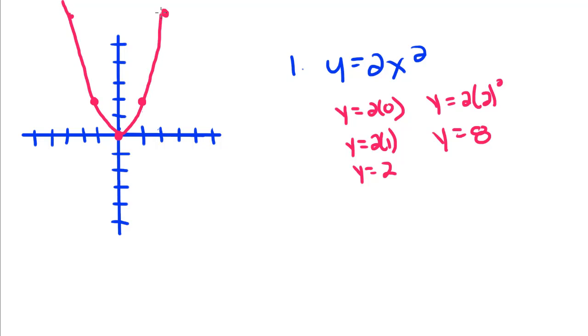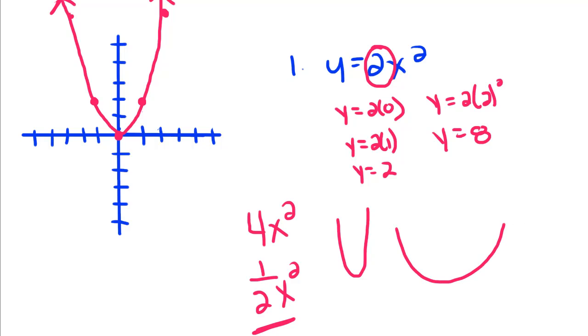When we put a big number out front, the graph is going to get skinnier. The way I like to think of it, when you have a bigger number in front of an x, you have more exercise. And if you have more exercise, you're going to be skinnier. So whenever you have like a 4 out front, you're going to have a skinnier graph. But if you had like a 1 half out front, you get less exercise, so you're going to be wider.